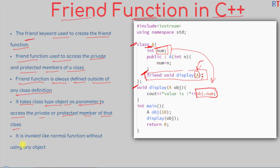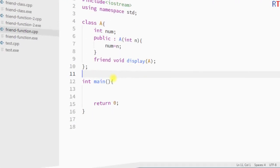The friend function is invoked like a normal function, without using any object. Whenever we call the friend function, we directly write the name of the function and pass the parameters — we don't have to use any object to call it. This is because the friend function does not belong to any particular class; we define it outside of any class definition, so no object is needed to call it.